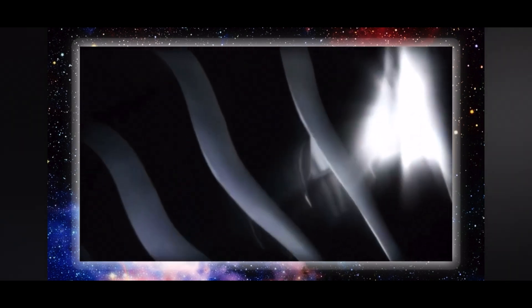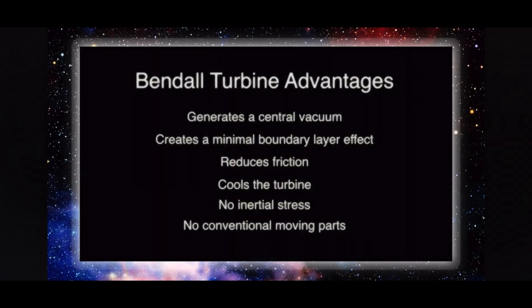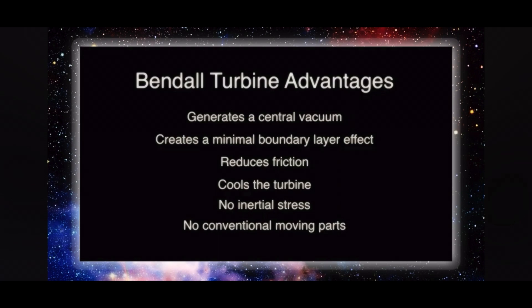A conventional jet turbine blade has a high-pressure boundary layer that generates friction and therefore heat, whereas the Bendel turbine fire tornado creates a central vacuum, which expands out beyond the turbine blades, causing the air in front of the Bendel turbine to be sucked into the central vacuum. The vacuum creates a minimal boundary layer effect, reducing friction and cooling the turbine. The differential expansion doesn't matter on the blades because there is no inertial stress.